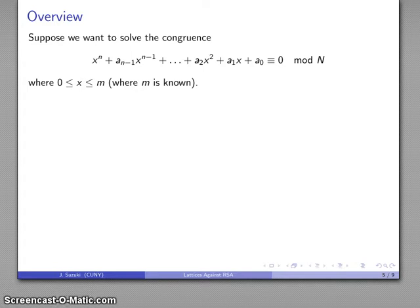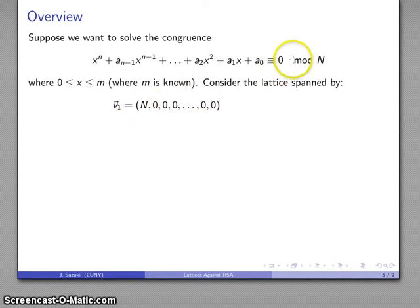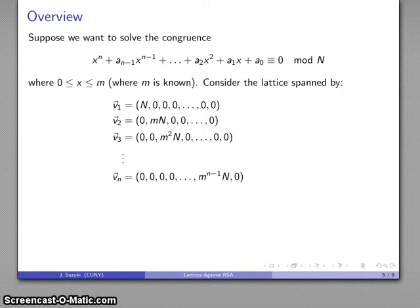And so, let's take a slightly more detailed overview. So, let's have the actual congruence. So, here's a congruence I want to solve. It's some polynomial equation mod N. And I'm going to consider the lattice that's going to be spanned by the following basis vectors. Here's V1 is going to consist of N, the modulus. V2 is going to consist of the maximum value of X times the modulus. V3, zeros, and then M squared times the modulus, and so on. All the way down to VN, which is going to be the all zeros except for the next-to-last component, the penultimate component, if you want to show your erudition. That's M to power N minus 1 times N.